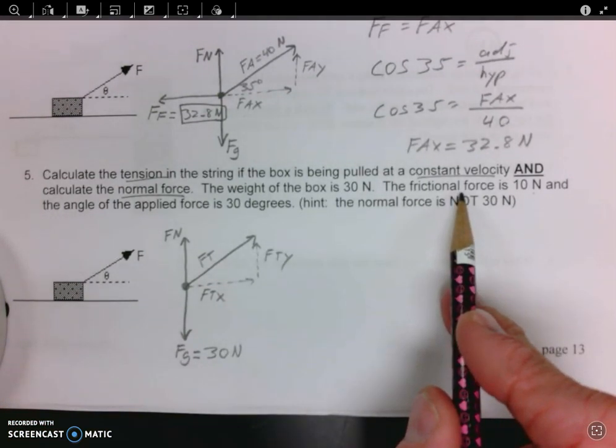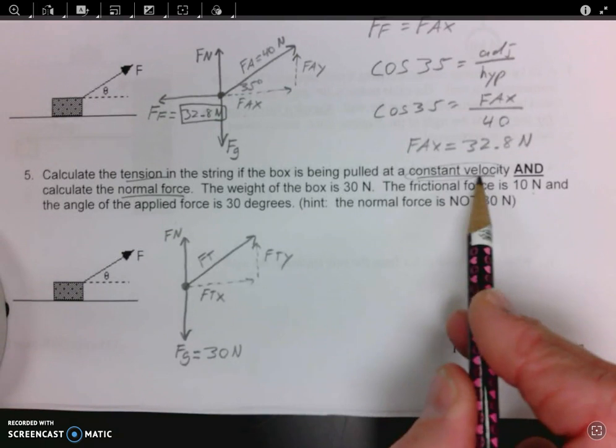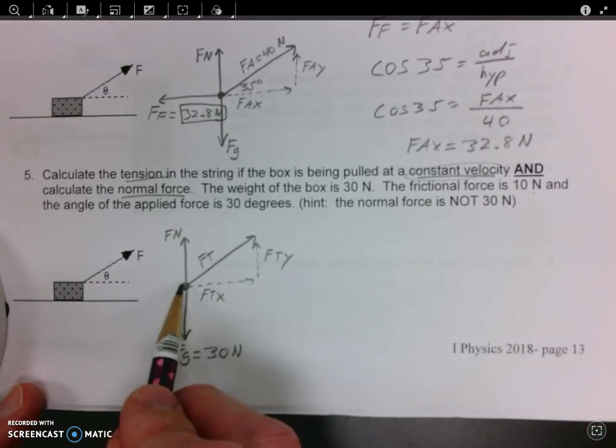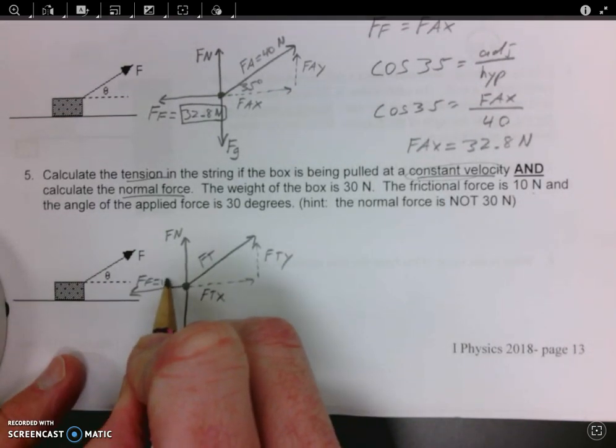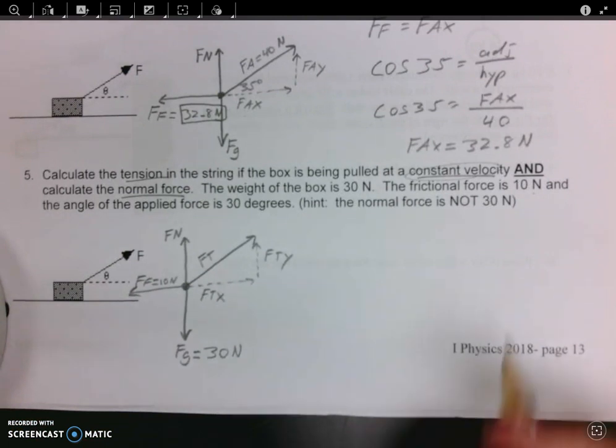We can also infer this, because it's balanced forces. If you have a force going to the right, there must be a force going to the left, and that would likely be friction. Now, we know that the force of friction is 10 newtons. That was given to us in the problem.